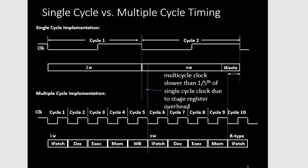In this tutorial we'll be looking at how pipelining works and how single cycle and multi-cycle clock implementations work. The first diagram shows a single cycle representation, which is basically executing one instruction in one clock cycle. Clock cycle 1 executes a load instruction, clock cycle 2 executes a store instruction, clock cycle 3 executes an R-type or J-type instruction, and so on.